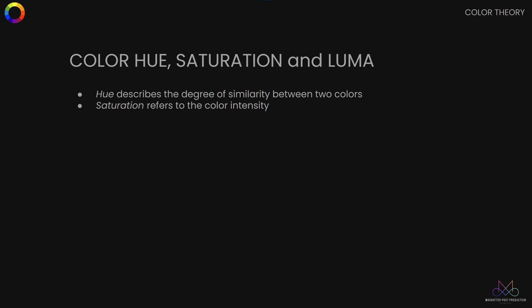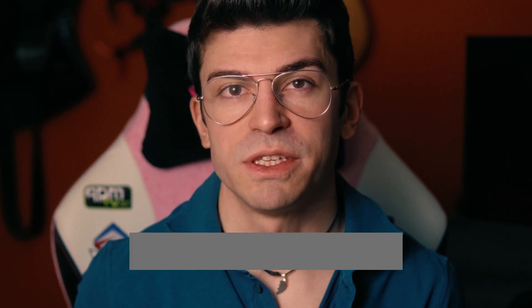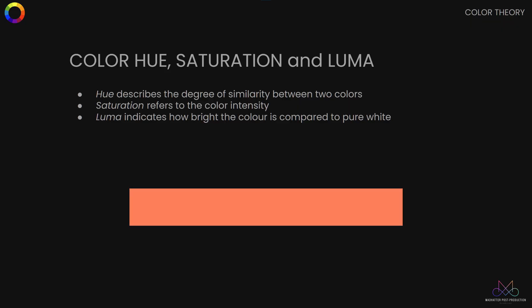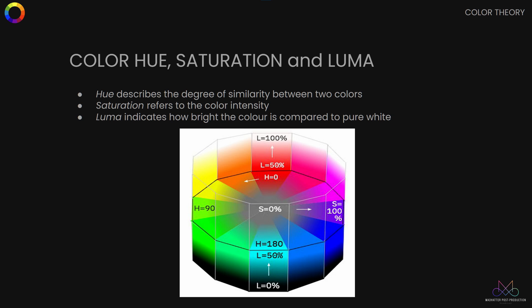Saturation refers to the intensity of a colour — in other words, how far or close it is to being grey. Finally, luma refers to the brightness of the colour compared to pure white. If you think about how we describe these three properties: hue sits on a circle, while saturation and luma are linear, giving you two more spatial directions. Effectively, you can put them together to build a cylinder that contains all possible shades of colour.